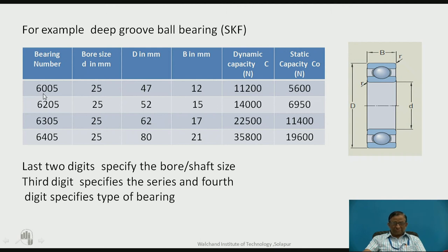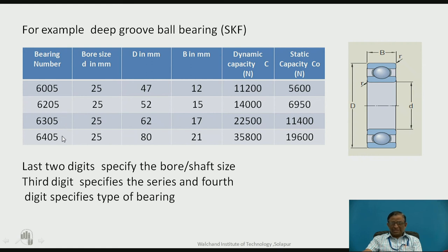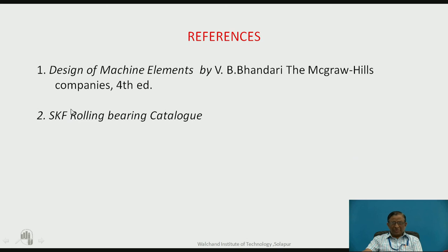The third digit specifies the series: zero series is the extra light series with the lowest dynamic load capacity. As the series number increases from zero to four, the dynamic load carrying capacity increases — series two is the light-medium series with about 14,000 N capacity, and higher series numbers give higher capacity. According to the required dynamic capacity, you decide this number. For example, to select a bearing for a 25 mm shaft requiring 12,000 N dynamic capacity, one can select bearing 6205. This is how the bearing is selected from the manufacturer's catalog.